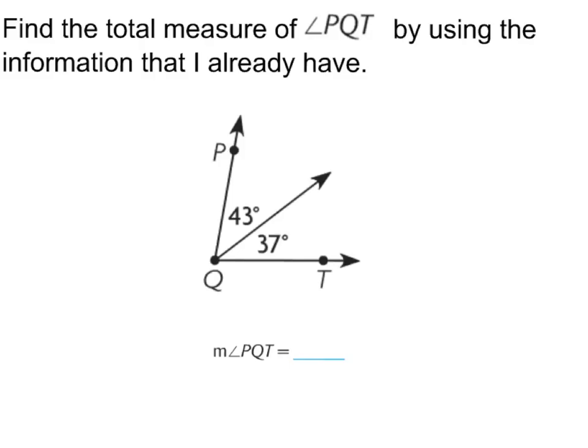Now this example says find the total measure of angle PQT by using the information that I already have. So far, I've been told that this acute angle is 43 degrees and this acute angle is 37 degrees. The combination of this angle and this angle will give me the total for angle PQT. So I'm going to add 43 plus 37 degrees, and it will give me 80 degrees. Now I know 80 degrees is an acute angle because it's less than 90 degrees. Does that answer make sense? I can see that this is less than a right angle because a right angle would be going straight up and straight across. So this answer makes total sense.